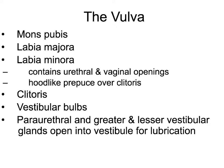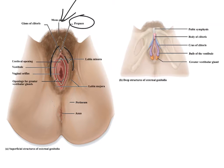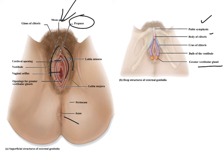Now we'll talk about the vulva. The mons pubis is the fatty mound over top of the pubic symphysis. The prepuce is kind of like the hood that's over the clitoris. Labia majora is going to be on the outside, and labia minora is on the inside. Here's the hole for the urethra, and here's the hole for the vagina and anus. If you look deeper, you'll be able to see the pubic symphysis, the clitoris, the vestibular gland, and those are things that are going to release secretions.